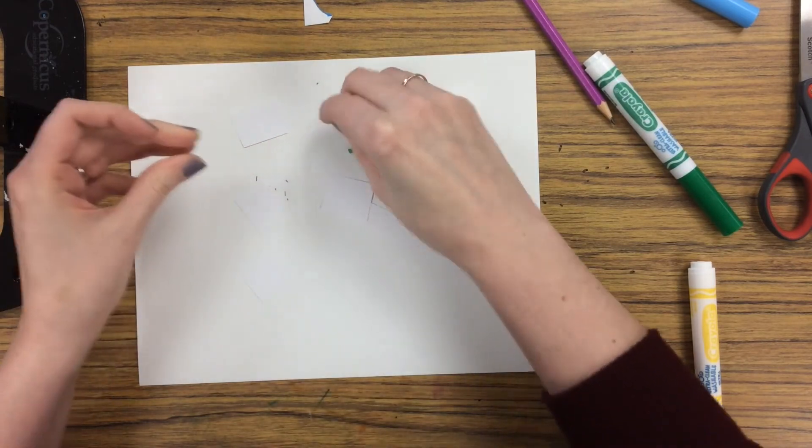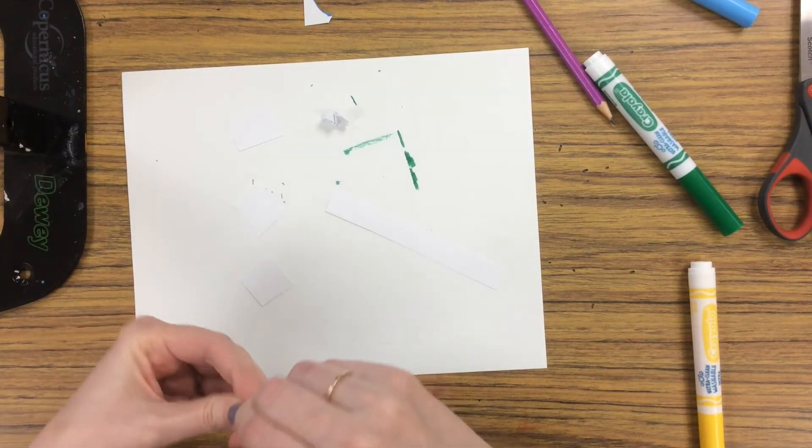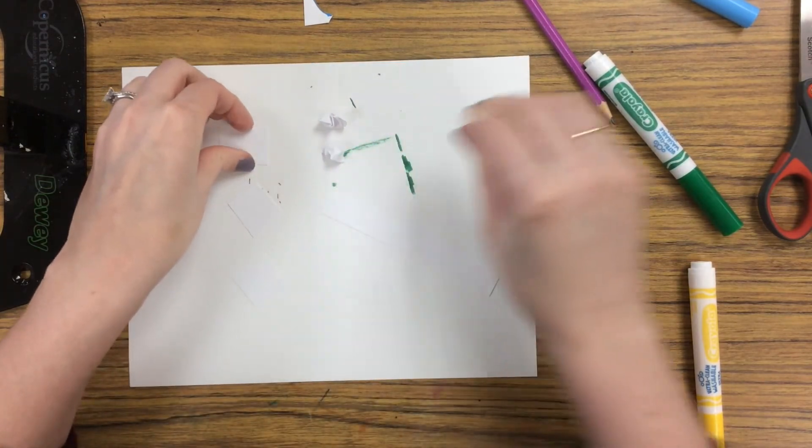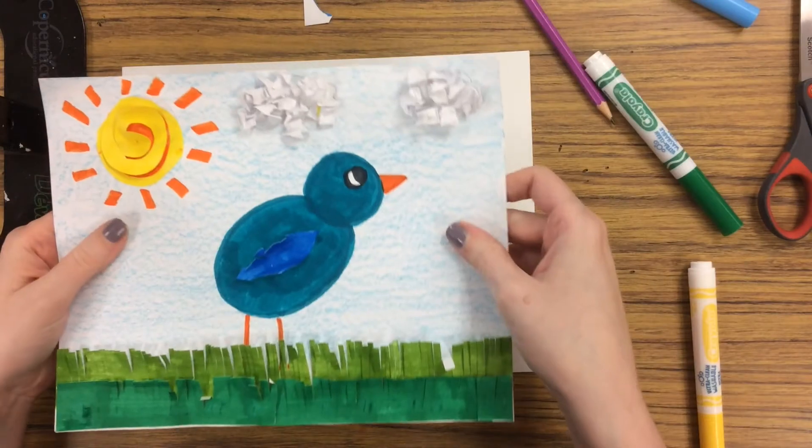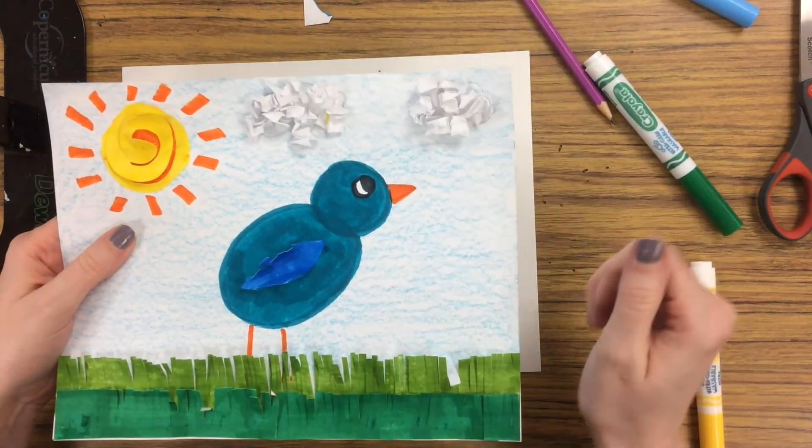And depending on what type of space you're trying to fill, you might just need a couple or you might need a whole bunch. I used this on my drawing for texture on my clouds. So I sketched out the cloud shape and I glued them on to make it look nice and puffy.